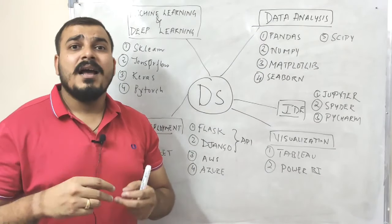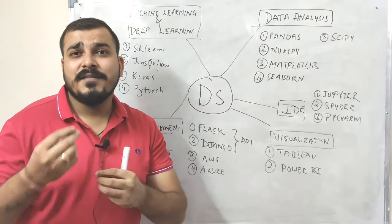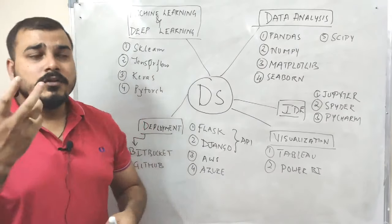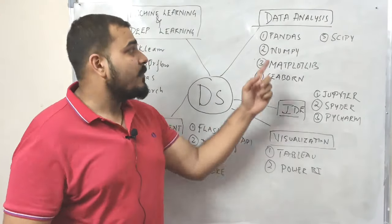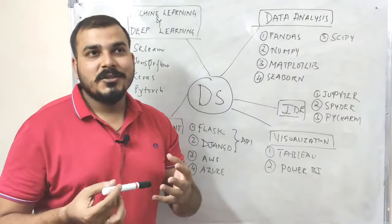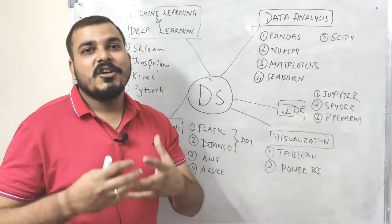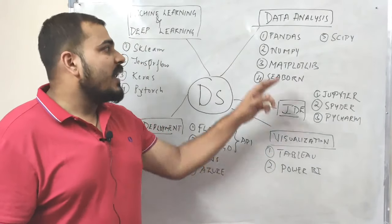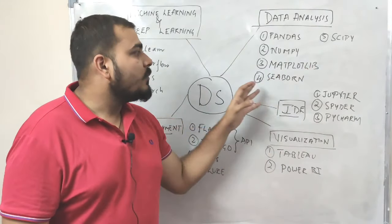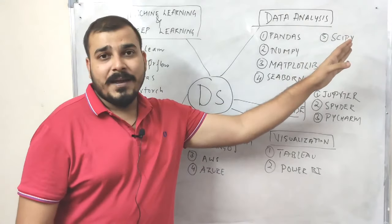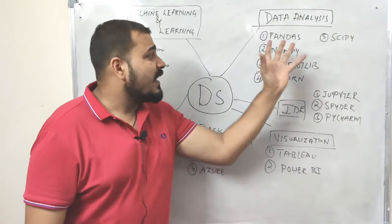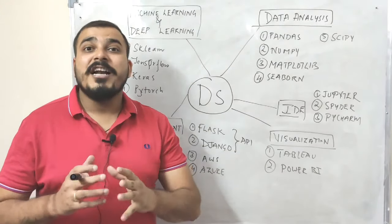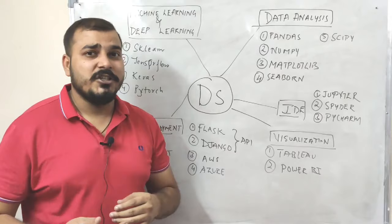Feature engineering basically means that I'll try to resolve the null values, missing values, and try to make the data in the right format so that it will be useful for our model creation. The most important library is Pandas, because with Pandas you'll be able to read the dataset, create data frames, and do a lot of operations. Then you have NumPy, Matplotlib, Seaborn, SciPy and many more. These are the most important libraries to consider during the data pre-processing or data analysis stage, which is also called as feature engineering.